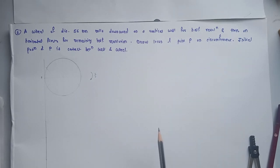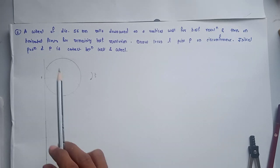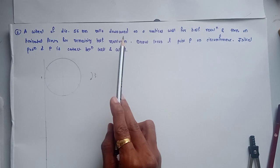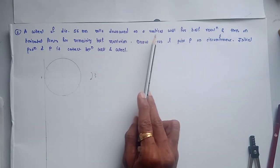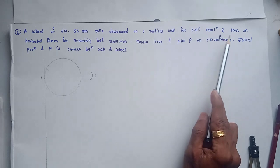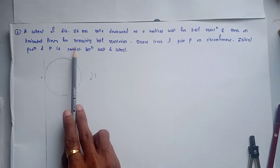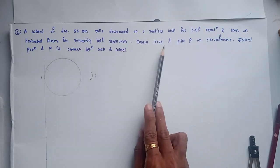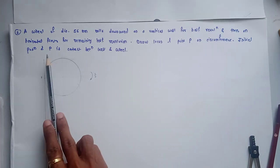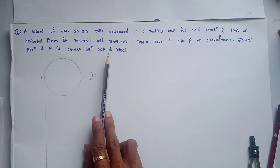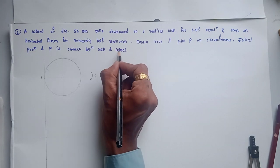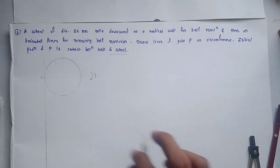This is the second question on the cycloid curve. A wheel of diameter 56 mm rolls downward on a straight vertical wall for half revolution, and then on the horizontal floor for the remaining half revolution. Draw the locus of point P on the circumference, where the initial position of P is the contact point between the wall and the wheel.